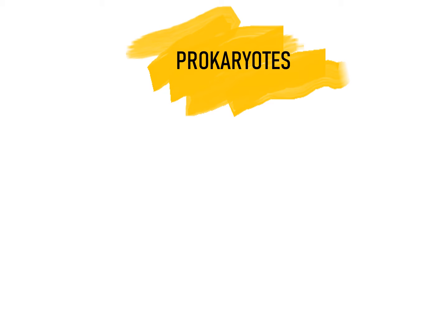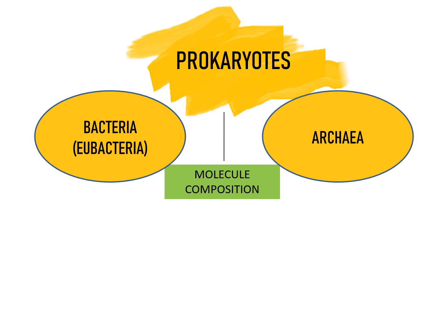Now let us know about the prokaryotes in detail. On the basis of molecular composition, the prokaryotes are divided into two categories: bacteria, which is also known as eubacteria, and the second category is archaea.